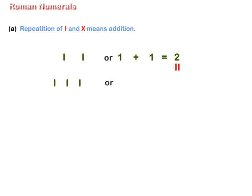III or 1 plus 1 plus 1 is equal to 3. In Roman, we write 3 as III. XX or 10 plus 10 is equal to 20.